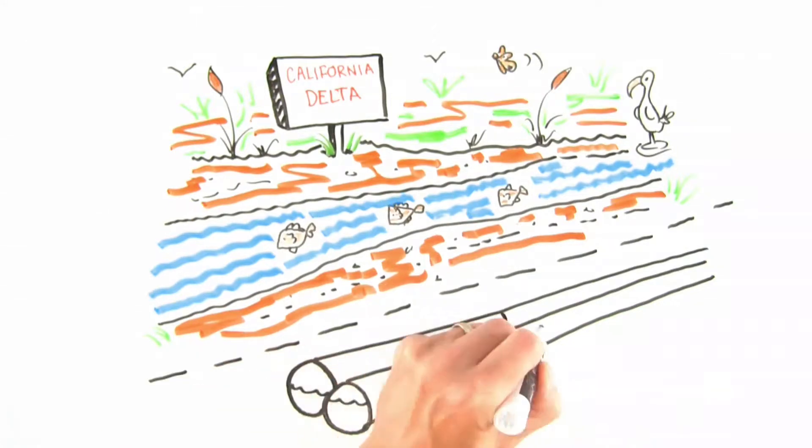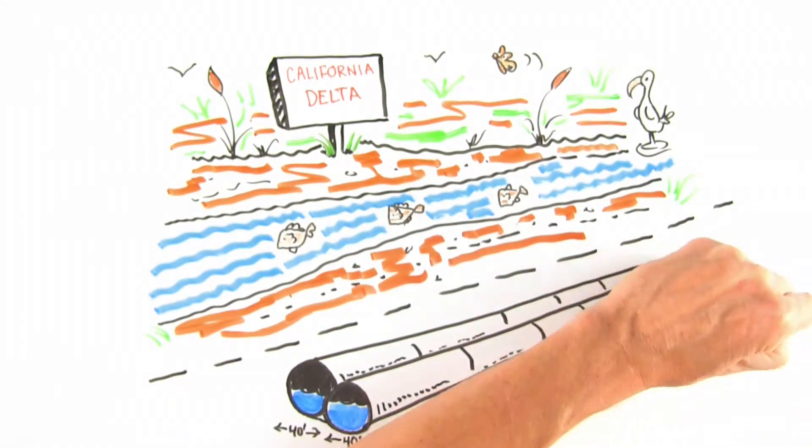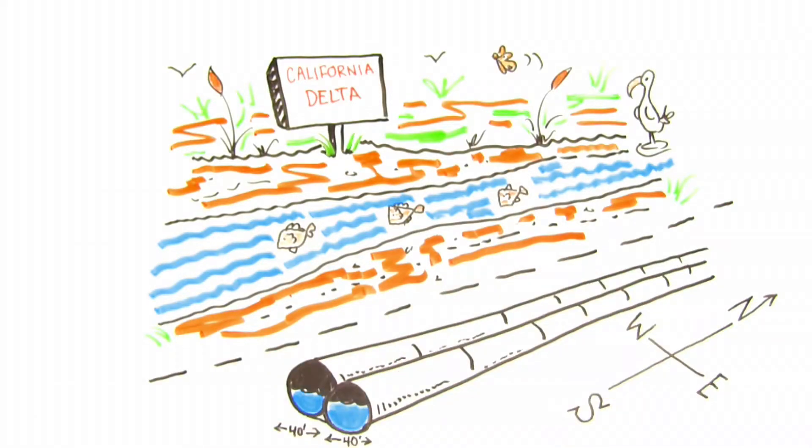A plan to build twin tunnels beneath the Delta, the California Water Fix, would ensure California gets its fair share of the water.